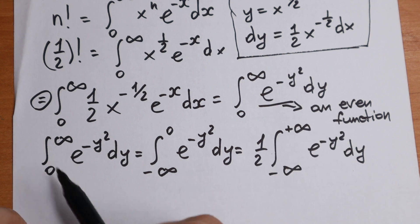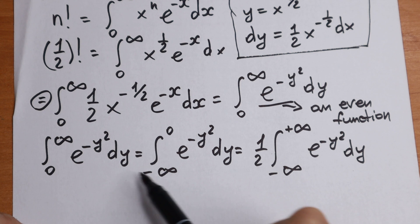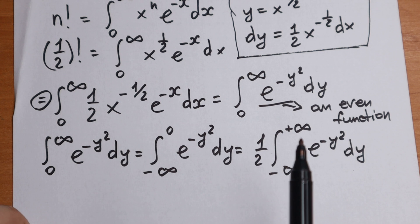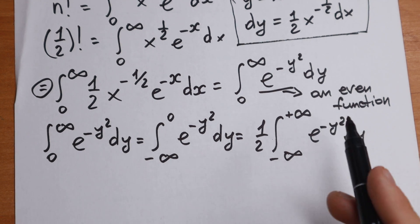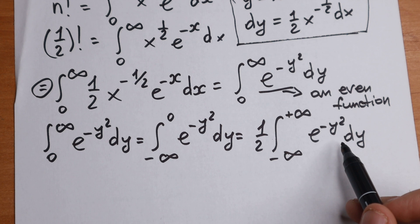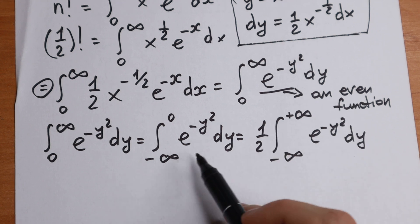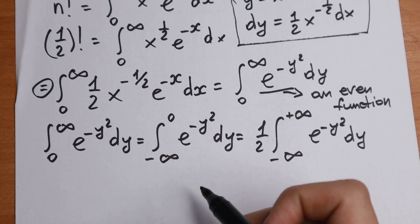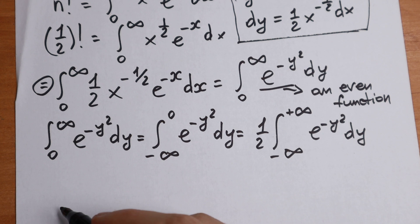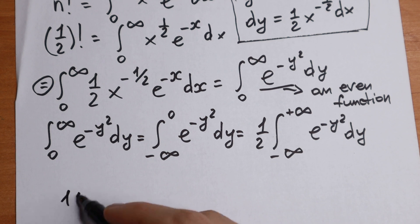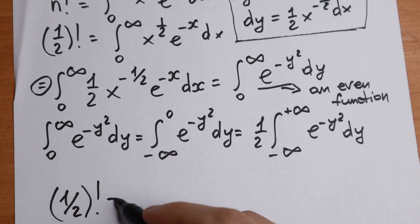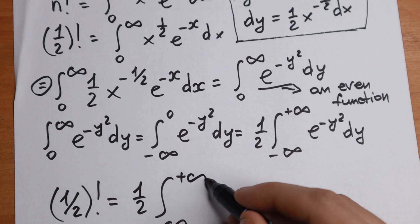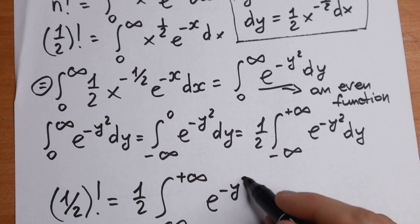Because this is an even function, the parts from minus infinity to 0 and from 0 to plus infinity are the same — it is symmetrical. The function e to the power minus y squared looks the same to the right and to the left of 0. So one-half factorial equals one-half times the integral from minus infinity to plus infinity of e to the power minus y squared dy.